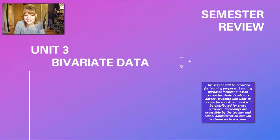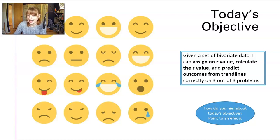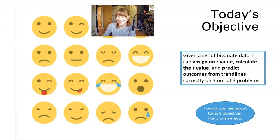Welcome back to math. Today we are reviewing Unit 3 bivariate data in preparation for the semester test. Today's objective is: given a set of bivariate data, I can assign an R value, calculate the R value, and predict outcomes from trend lines correctly on three out of three problems — so all of the problems correct today.